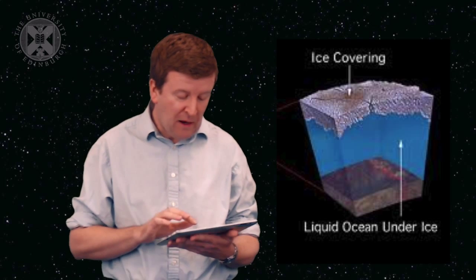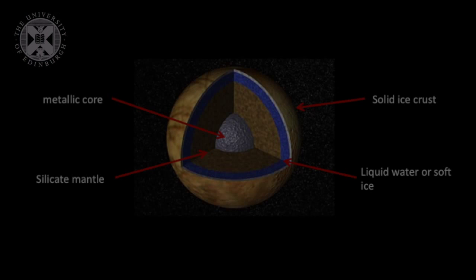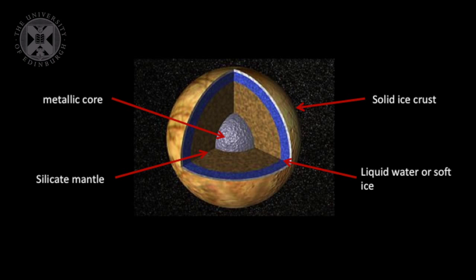When we put all this evidence together, we find a model that might look something like this. The inside of Europa may have a metallic core surrounded by a silicate mantle, a mantle essentially of rocks, then a liquid ocean over that core, and finally a solid icy crust on the surface, which is what we see with orbiting spacecraft.